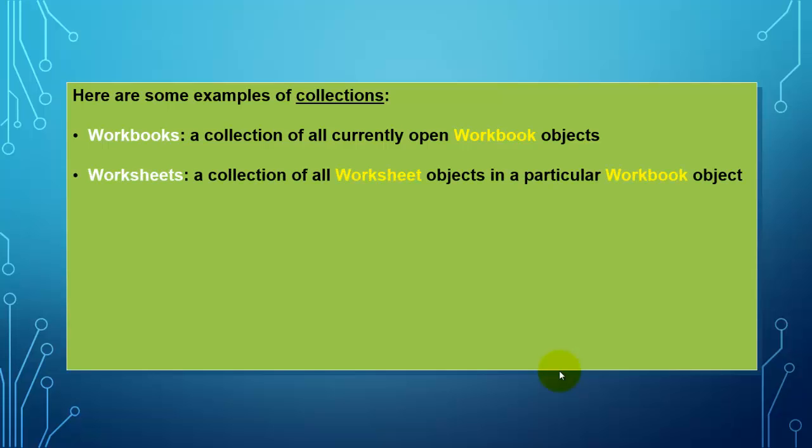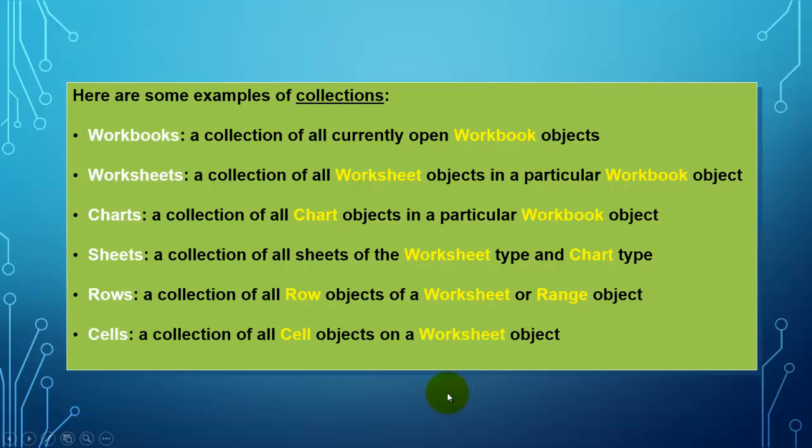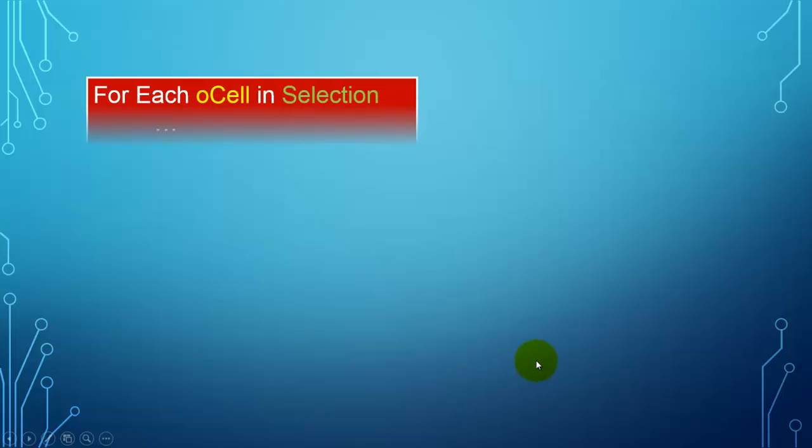All open workbooks can be found in the collection workbooks. All worksheets in a particular workbook can be found in the collection of worksheets. Charts is the collection of all chart objects. Sheets are more general than worksheets. They also include chart type sheets. Rows is a collection of all the row objects. Cells is a collection of all cell objects on a worksheet object.